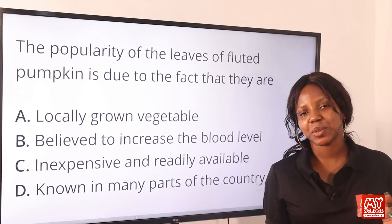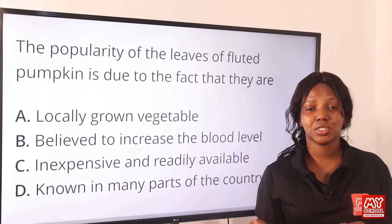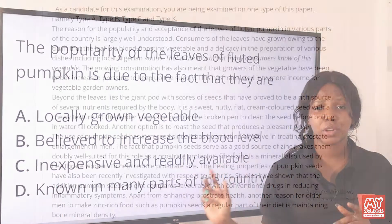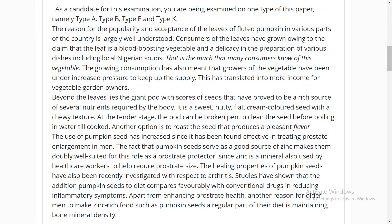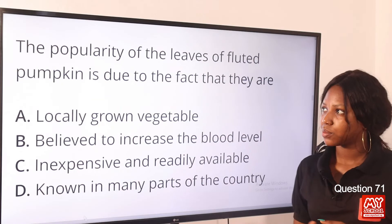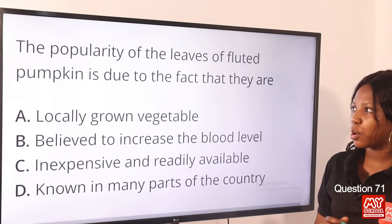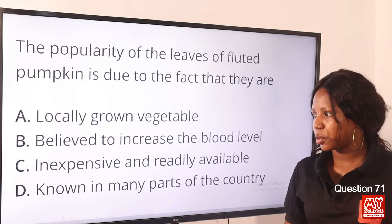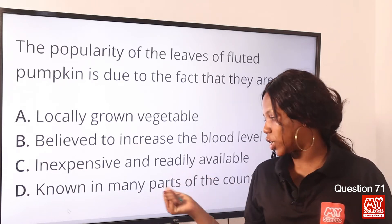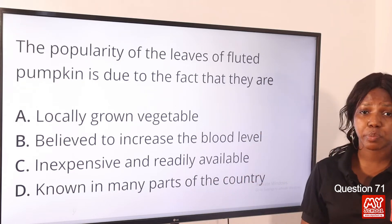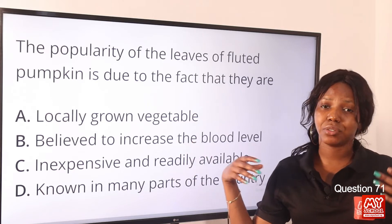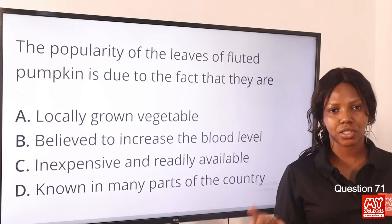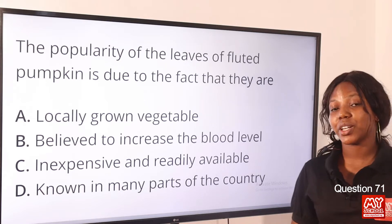Questions 71 to 73 come with a passage. I advise you to click the link in the description to access the complete passage on the MySchool website, or pause this video as it's displayed on screen. Question 71: The popularity of the leaves of fluted pumpkin is due to the fact that they are — option B — believed to increase the blood level. It is believed to be a blood-boosting vegetable. Option B is the correct answer.